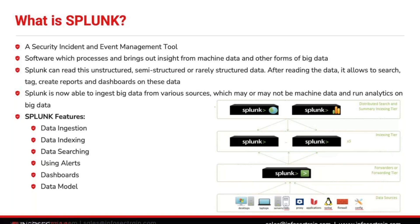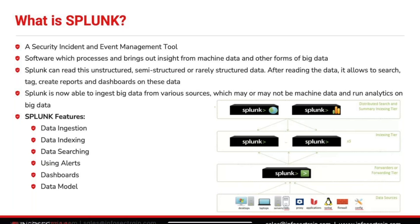Now let's look at how Splunk works — its architecture and core components. Splunk has three main components: the forwarder, the indexer, and the search head. The forwarder is the collector — it collects logs from endpoint devices, security devices, firewalls, antivirus, next-generation antivirus, and endpoint detection solutions. These logs are then forwarded to the indexer, where the logs are stored. Indexers are like black boxes that store logs, and you can have one or multiple indexes.